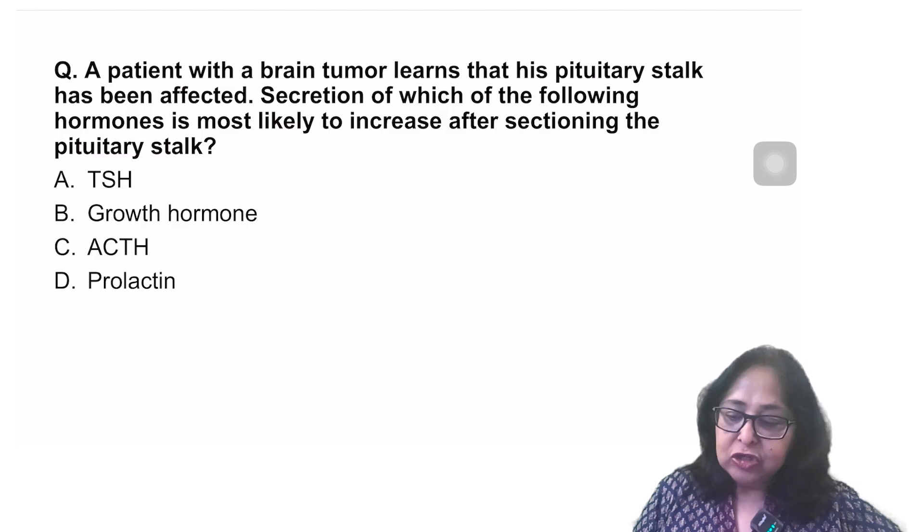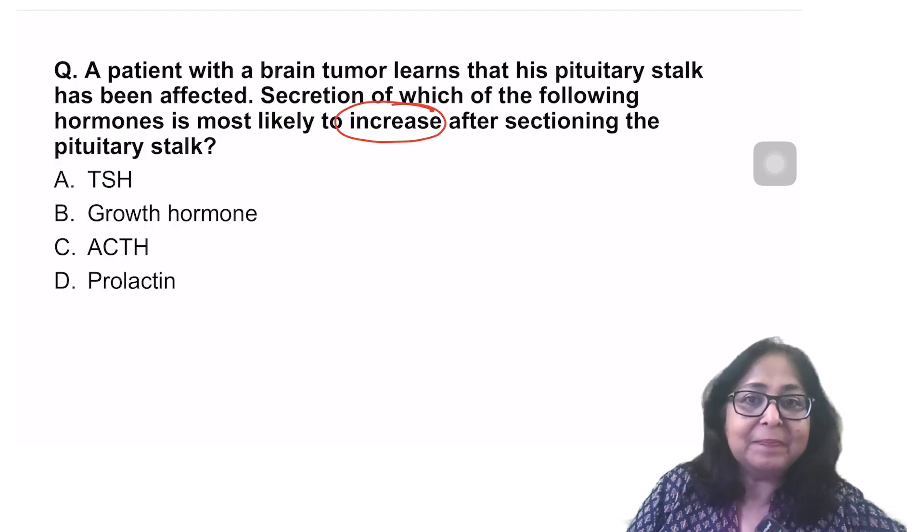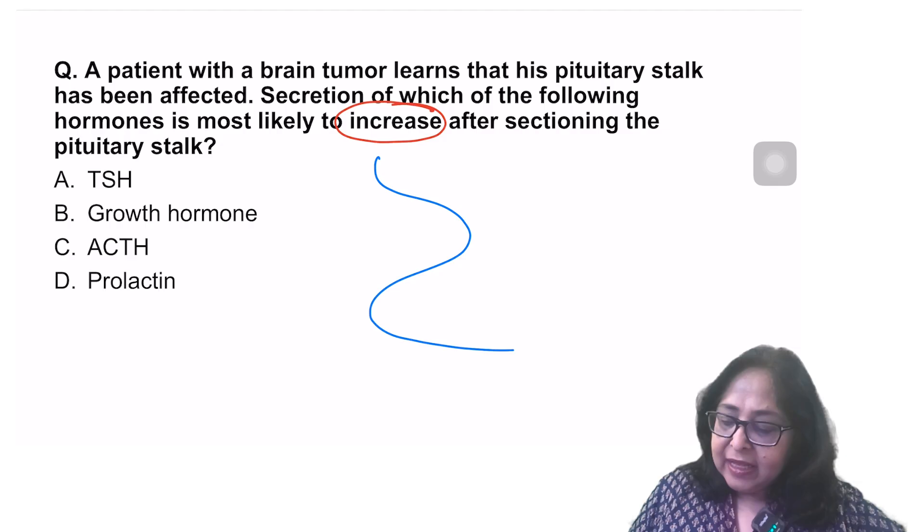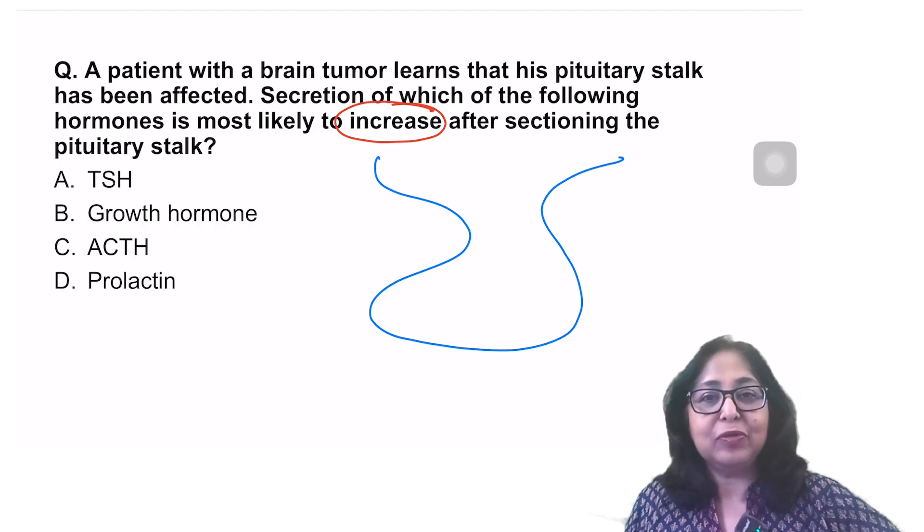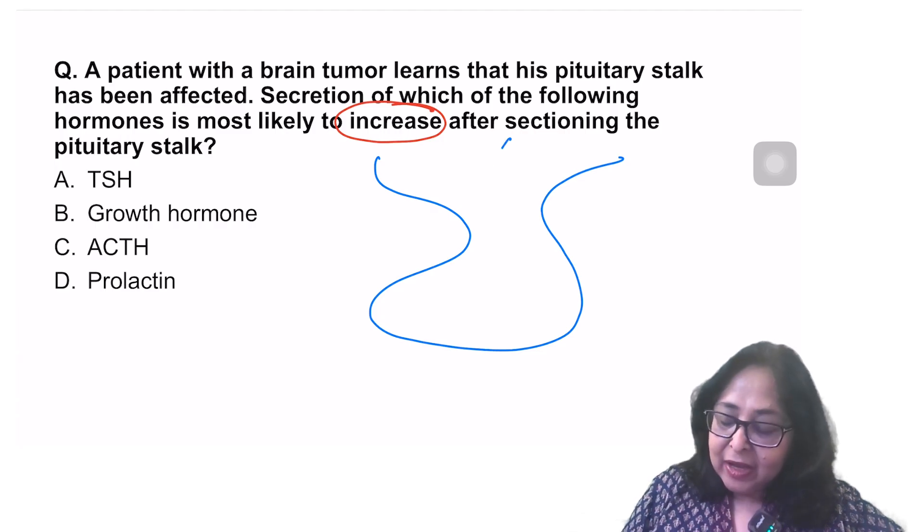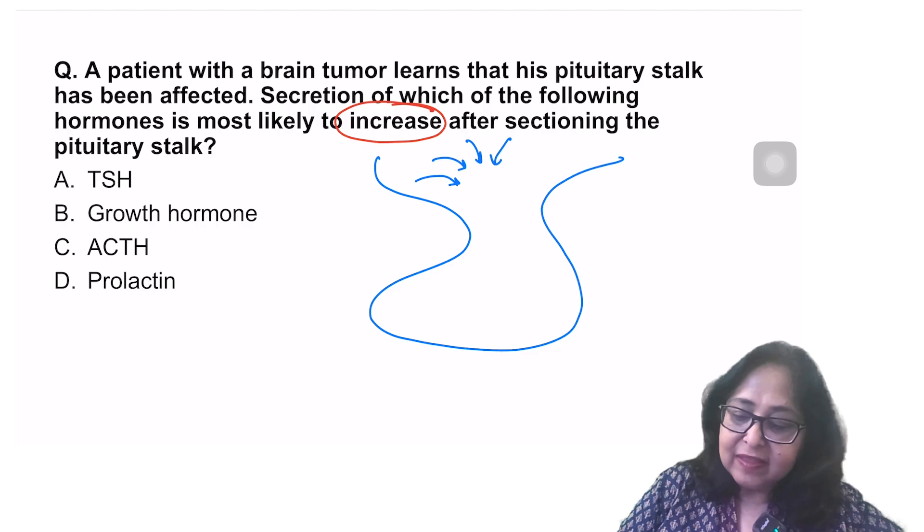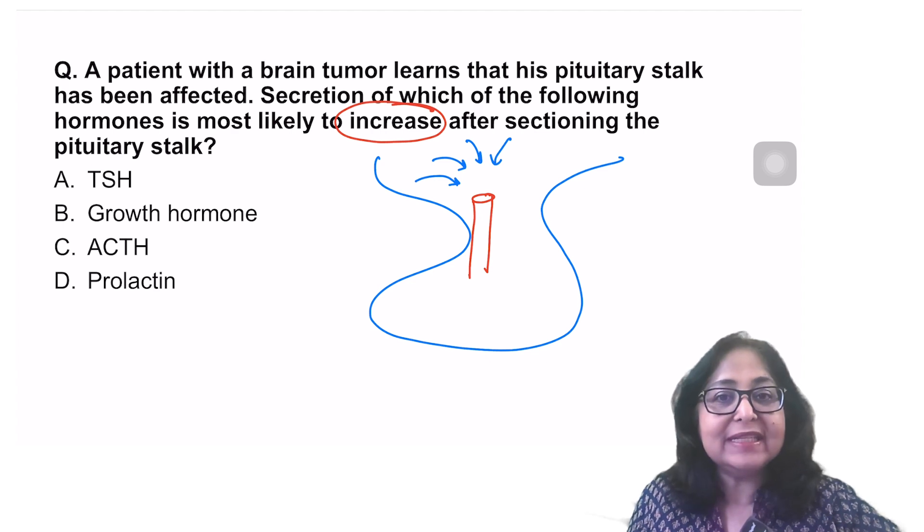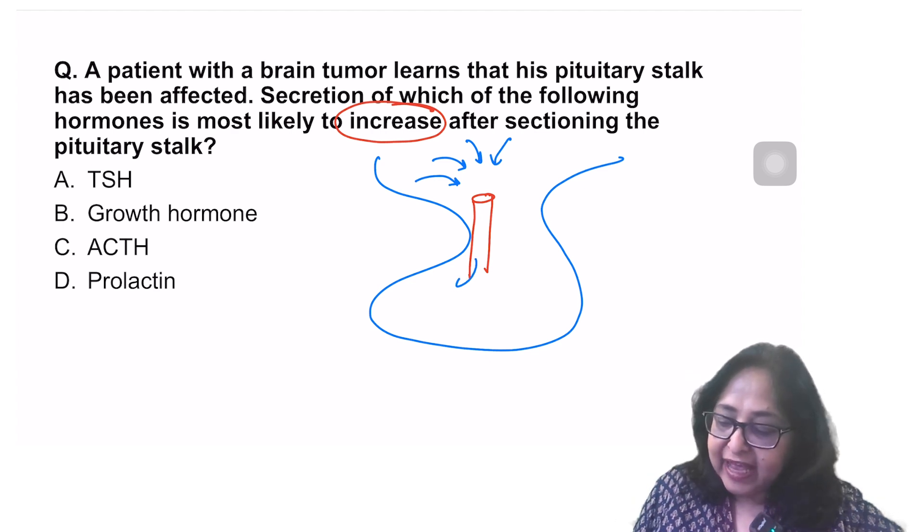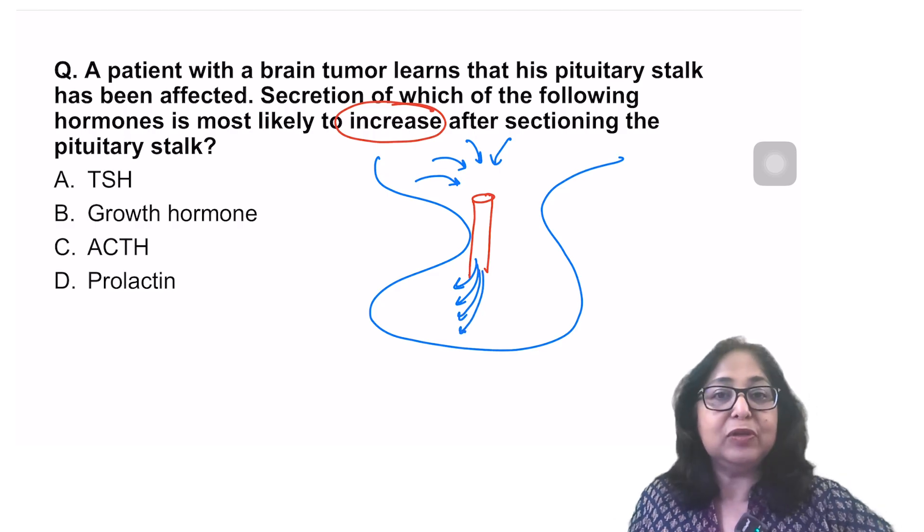The first question says, a patient with a brain tumor learns that his pituitary stalk has been affected. Secretion of which of the following hormones is most likely to increase after sectioning the pituitary stalk? So a brief recap. The anterior pituitary hormones are regulated by hypothalamic hormones. These releasing and inhibiting hormones enter into the hypothalamo-hypophysial portal system.